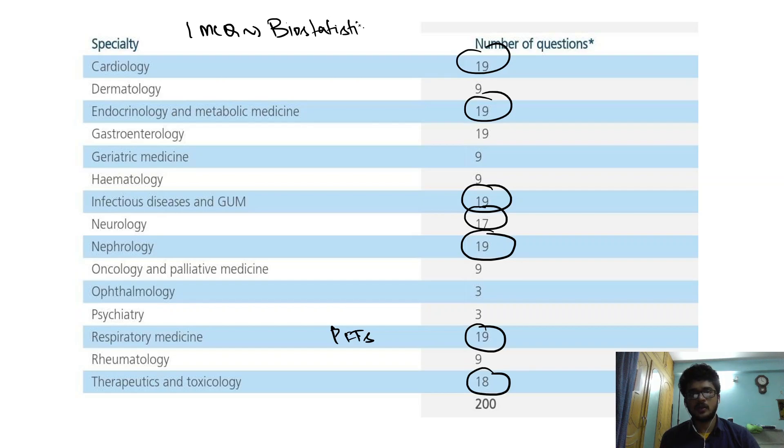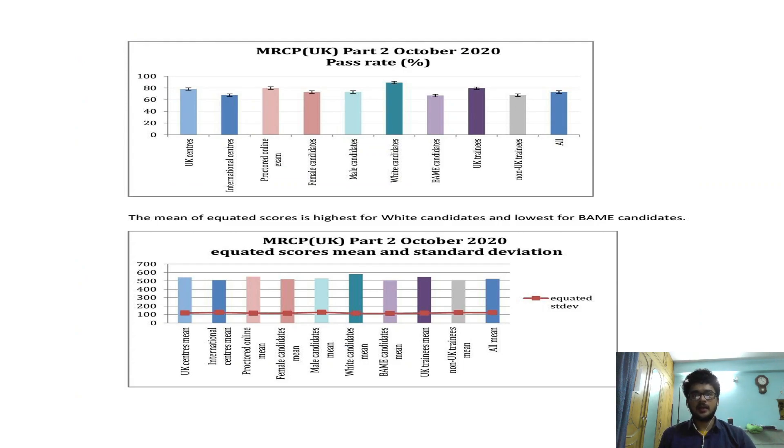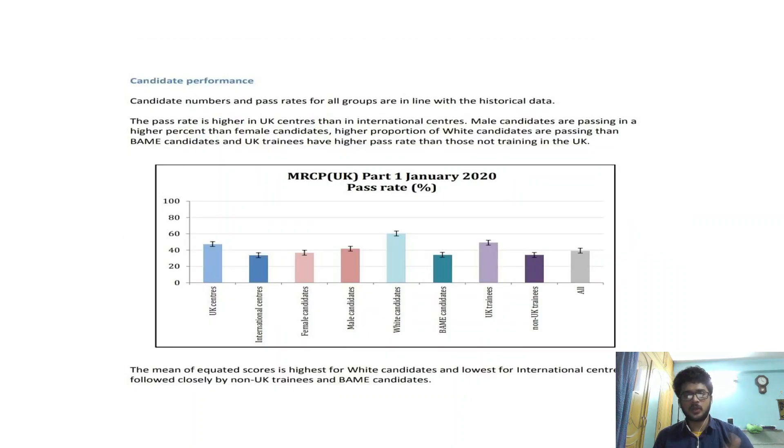Coming to the pass rate, the MRCP Part 2 pass rate is significantly higher compared to Part 1, around overall more than 70 percent. But don't let the pass rate fool you - Part 2 is actually a very tough exam, you have to be very well prepared. Compared to your Part 1, you can see Jan 2020, the pass rate is very less, just below 40 percent for Part 1.